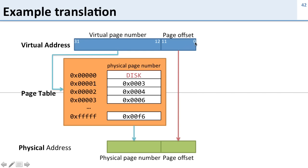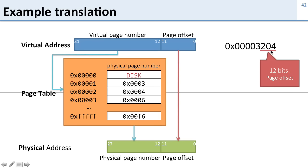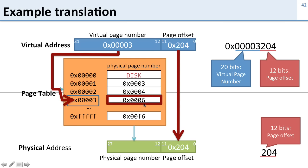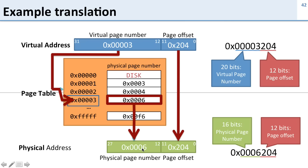Let's take a look at an example. The page offset is the first 12 bits, and then we've got the remaining 20 bits for the virtual page number. Down in our physical address, we've still got 12 bits for the page offset and the remaining bits for the physical page number. We translate this virtual address: the 12-bit page offset goes straight through unchanged, then we look up the 20-bit virtual page number in the page table, find our page table entry, and get out the physical page number. The virtual address 0003204 translates to physical address 0006204.